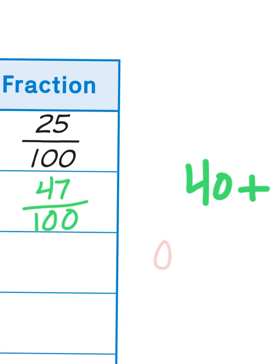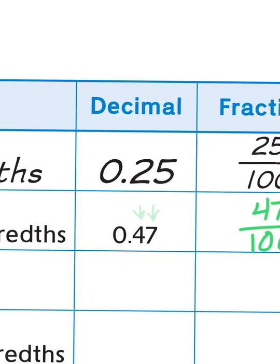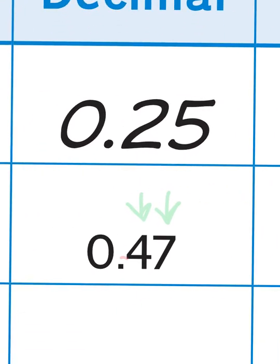So that 4 right there is a tenth. If I wrote it in a different order, say 0.74, the 4 here would then represent hundredths. But because it was placed first by that decimal, the 4 represents tenths.